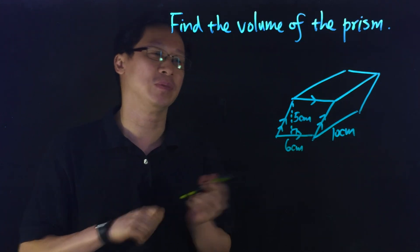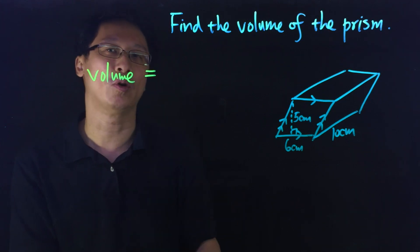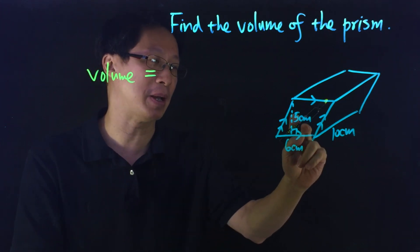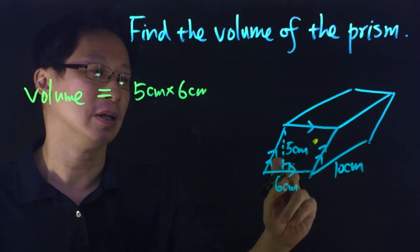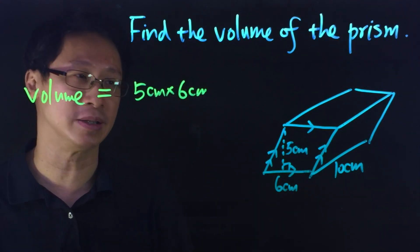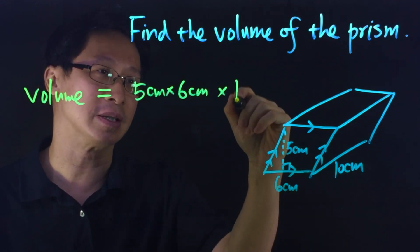Then we can apply the formula directly. The volume of the prism is given by the base area, which is 5 cm times 6 cm, times the height of the prism, which is 10 cm.